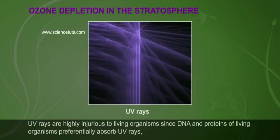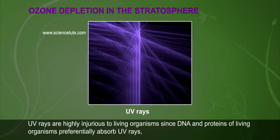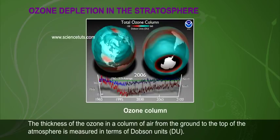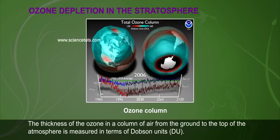UV rays are highly injurious to living organisms since DNA and proteins of living organisms preferentially absorb UV rays, and their high energy breaks the chemical bonds within these molecules. The thickness of the ozone in a column of air from the ground to the top of the atmosphere is measured in terms of Dobson units (DU).